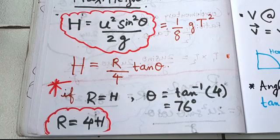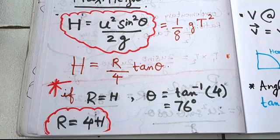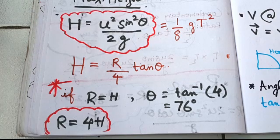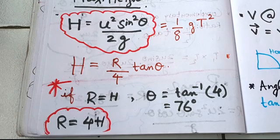When R equals H: that gives the condition theta equals tan inverse 4, which is approximately 76 degrees. When R equals 4H, theta equals tan inverse 1, which is 45 degrees.